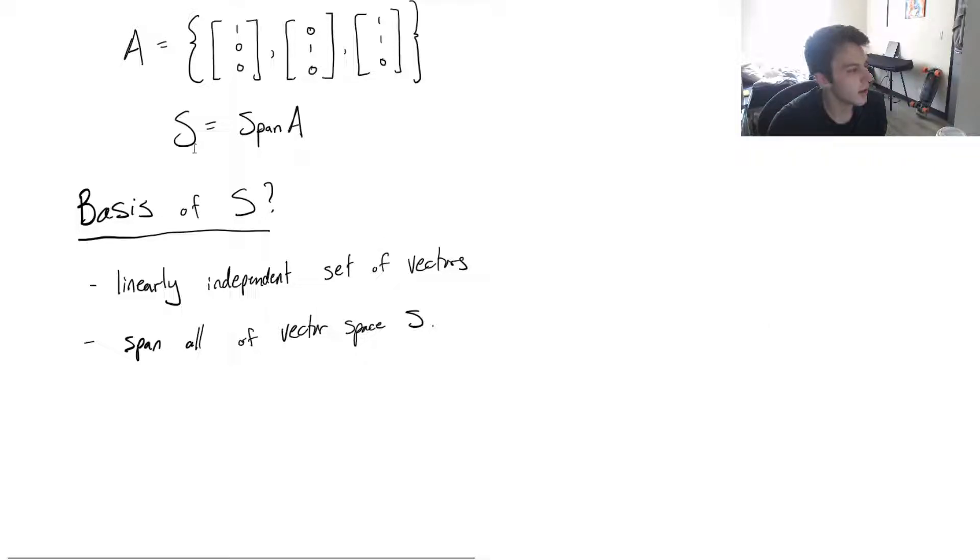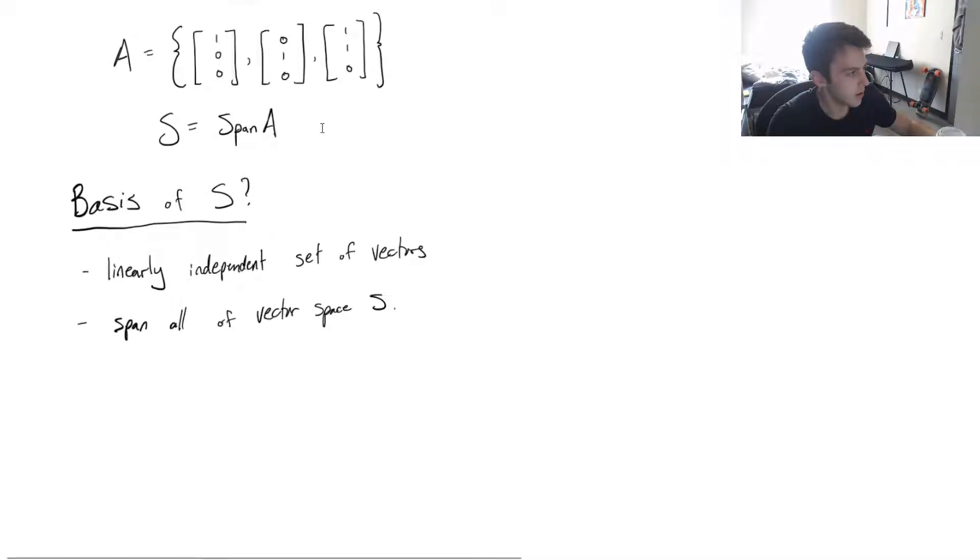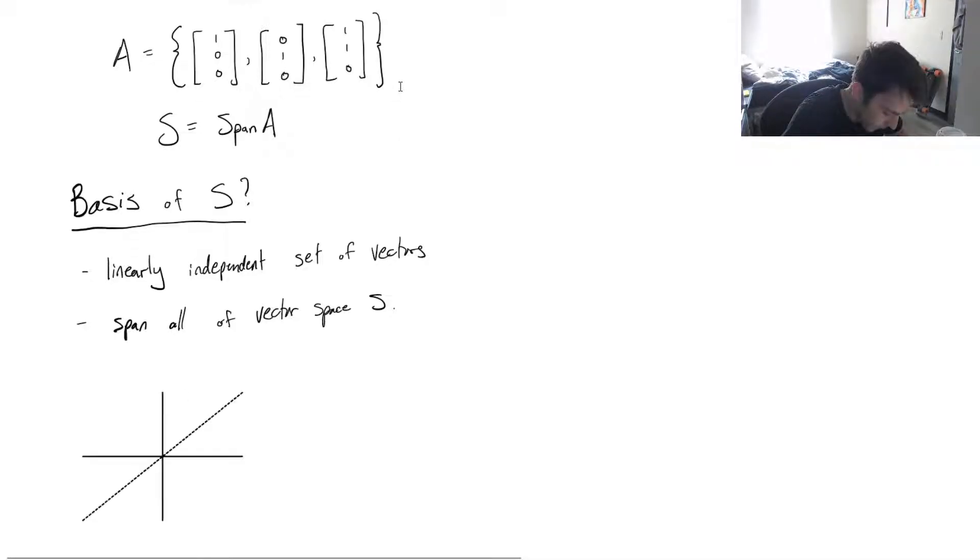So let's just think here. I chose an easy example so we can pretty easily visualize it. What I want to do, let's think, if S is the span of A, let's just think geometrically. Like, what is the span of A? I'm just picking random axes that these vectors will correspond to.